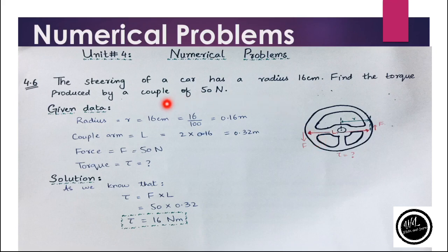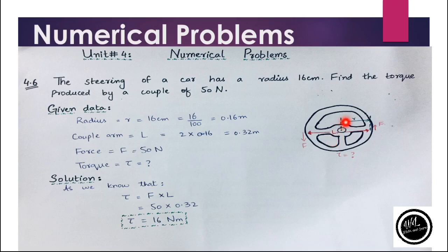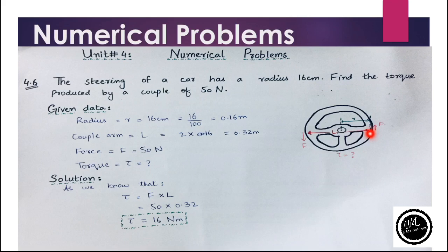From the formula of a couple, the couple equals either force multiplied by the perpendicular distance between the forces, where the moment arm is represented by L. The radius from the center to either end is 16 centimeters, which converts to 0.16 meters. The moment arm L equals 2R, which is the diameter: 2 multiplied by 0.16 equals 0.32 meters.